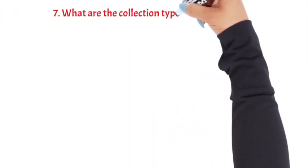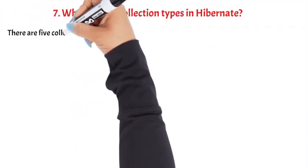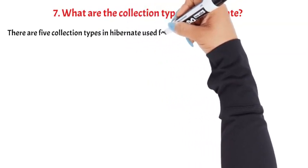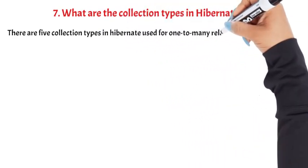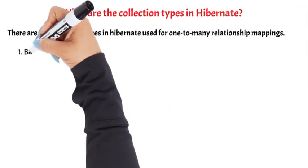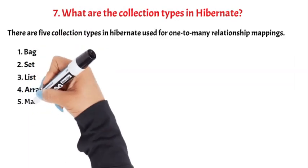Question 7: What are the collection types in Hibernate? There are five collection types in Hibernate used for one-to-many relationship mappings: Bag, Set, List, Array, and Map.